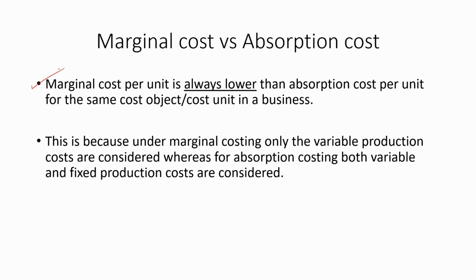Marginal cost per unit is always lower than absorption cost per unit for the same cost unit in a business. This is because under marginal costing, only the variable production costs are considered, whereas for absorption costing, both variable and fixed production costs are considered.